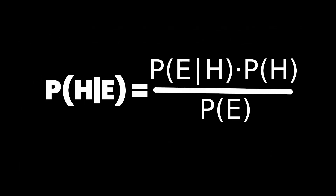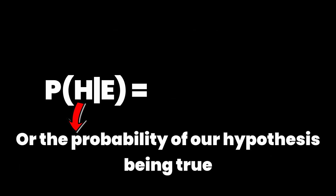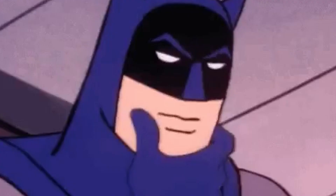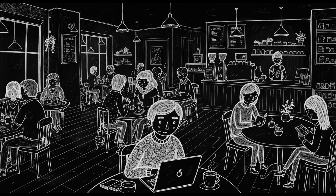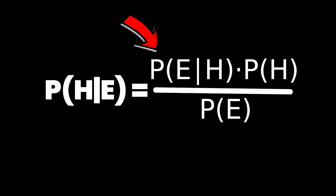The whole point is to figure out P(H|E), the probability of our hypothesis being true given the new evidence. First, you need your P(H), your prior. Before you see any new evidence, how likely is your theory to be true? For example, the chance a random person in a coffee shop is a software engineer might be 5%.